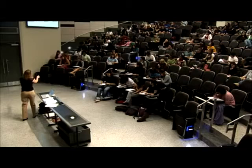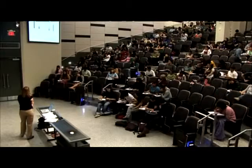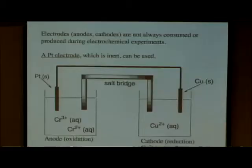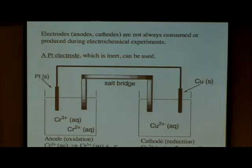So what about over here? This is the anode, which has the oxidation reaction going on. What oxidation reaction can you imagine happening with chromium plus 3 and chromium plus 2? You're going from plus 2 to plus 3 with one electron — that would be the oxidation reaction.